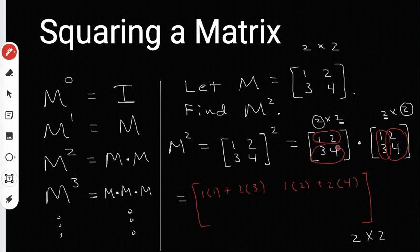So I'm going to circle the bottom row over here, and I'm going to multiply it by these two columns. So I have 3, 4 times 1, 3. That's going to give me 3 times 1, plus 4 times 3. Now I move on to the second column. So now 3, 4 times 2, 4. I'm going to get 3 times 2, plus 4 times 4. So now I've exhausted all the columns, and I've exhausted all the rows.